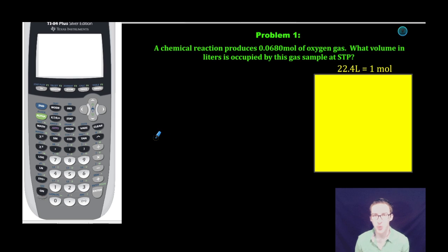Alright, so let's take a quick look at problem number one. It says a chemical reaction produces 0.0680 moles of oxygen gas. What volume in liters is occupied by this gas sample at STP?